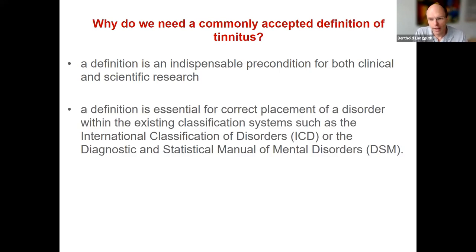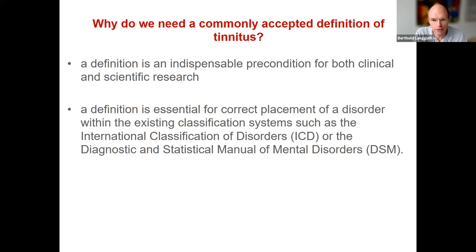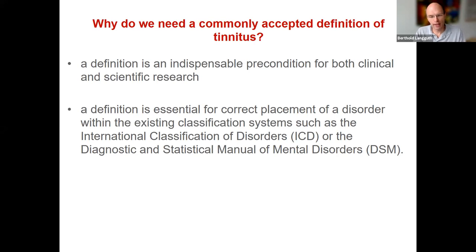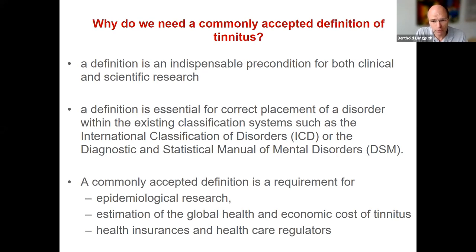Moreover, in all health systems in the world, there is a need to place the different symptoms and disorders in categories and systems. There are different international systems of classification of disorders, like the WHO system, the International Classification of Diseases, or for brain disorders, the Diagnostic and Statistical Manual of Mental Disorders. We need a clear definition in order to have a correct placement of the disease, disorder, or symptom in these classifications, because based on these classifications, all health systems work and all reimbursement is organized.